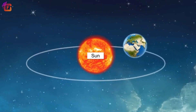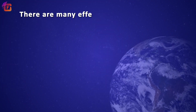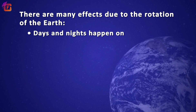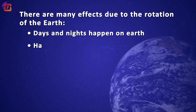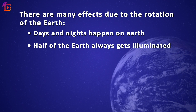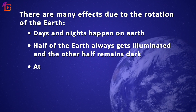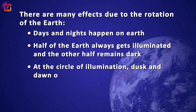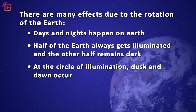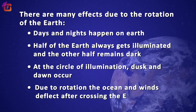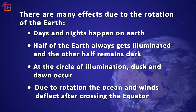Rotation is the movement of Earth about its axis and revolution is the movement of planets around the Sun. If you observe keenly, you would see different effects due to rotation. First, days and nights happen on Earth. Second, half of the Earth always gets illuminated and the other half remains dark. Third, at the circle of illumination, dusk and dawn occur.